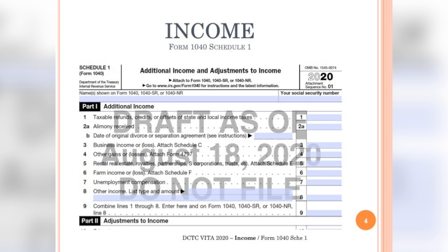We've only been using this relatively new schedule for about three years. Although the slide shows a draft, I'm pretty sure this is what it will look like in its final version. As you can see, Schedule 1 has space for both additional income, which we'll discuss now, as well as adjustments to income. You will see this schedule again when we get to the adjustment overview section. For now, let's concentrate on the additional income section.